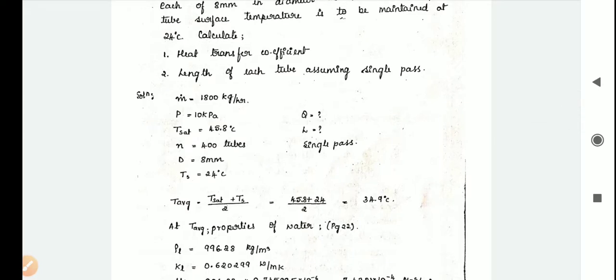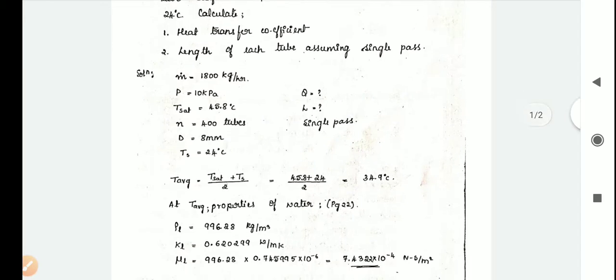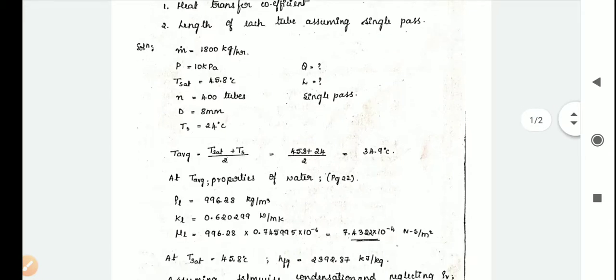The given data are: mass is 1800 kg per hour, pressure is 10 kPa, saturated temperature is 45.8 degrees Celsius, number of tubes is 400, diameter is 8mm, and surface temperature is 24 degrees Celsius.